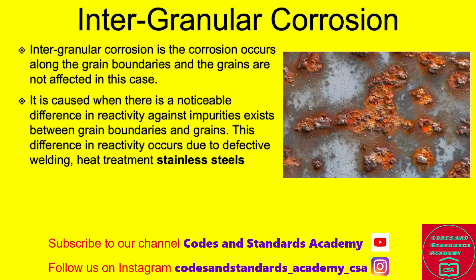Intergranular corrosion occurs along the grain boundaries. It is caused when there is a noticeable difference in reactivity against impurities between grain boundaries and grains. This difference in reactivity occurs due to defective welding and heat treatment of stainless steel.